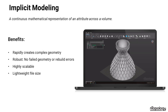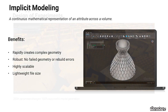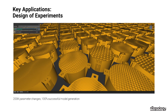Other key benefits of implicit modeling include the ability to create complex geometry at any scale with exact resolution. Things like booleans and offsets never fail, and it's extremely lightweight to work with — the file size is also extremely lightweight. This picture shows a design of experiments where around 200,000 parameters were changed with 100% successful model generation. I'm going to hand it over to Jonathan Harris to do a live demo and go over the nTop Platform and the implicit modeling kernel behind it.